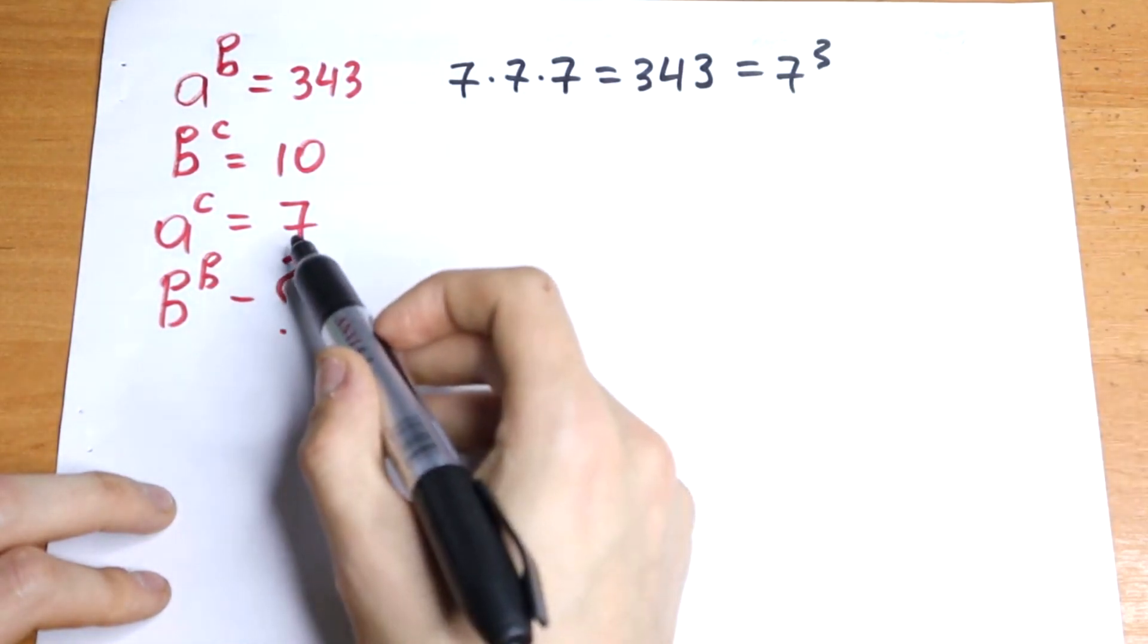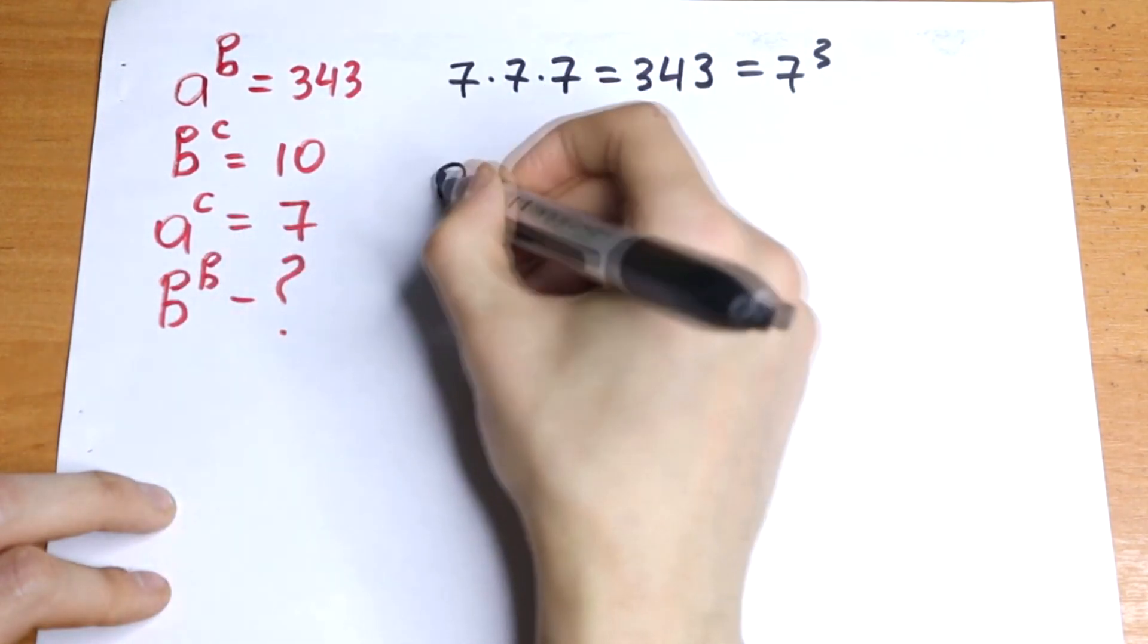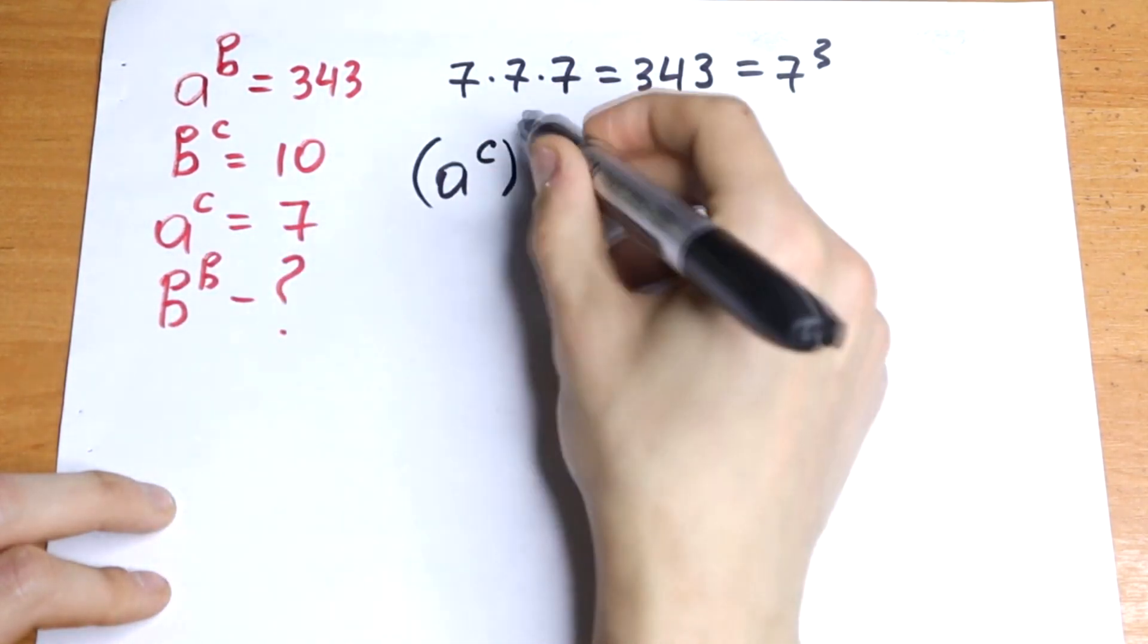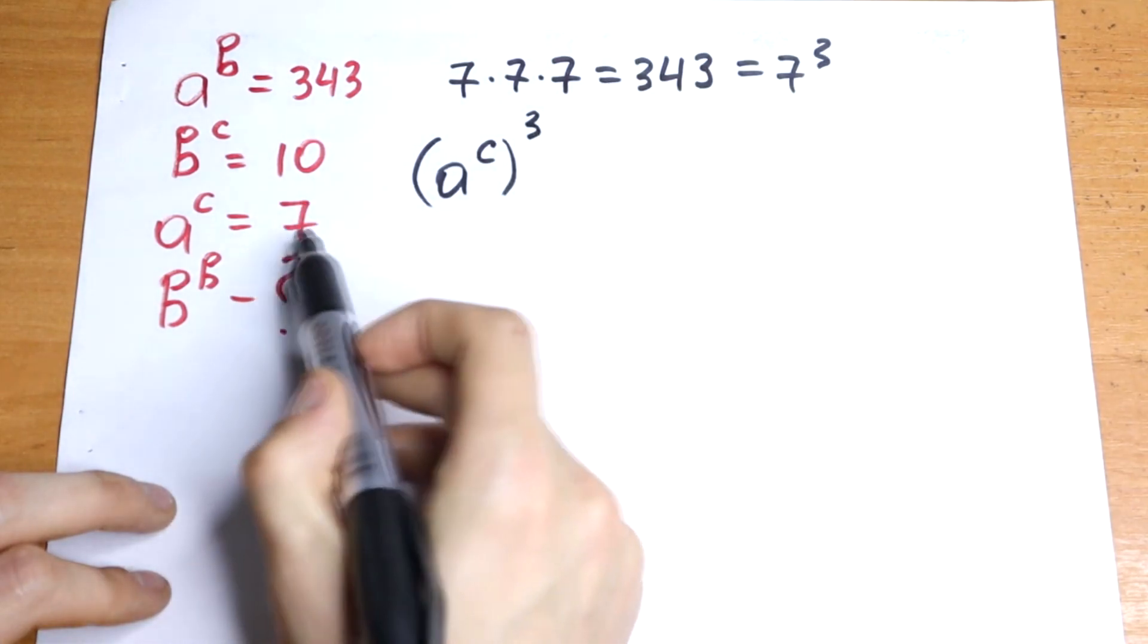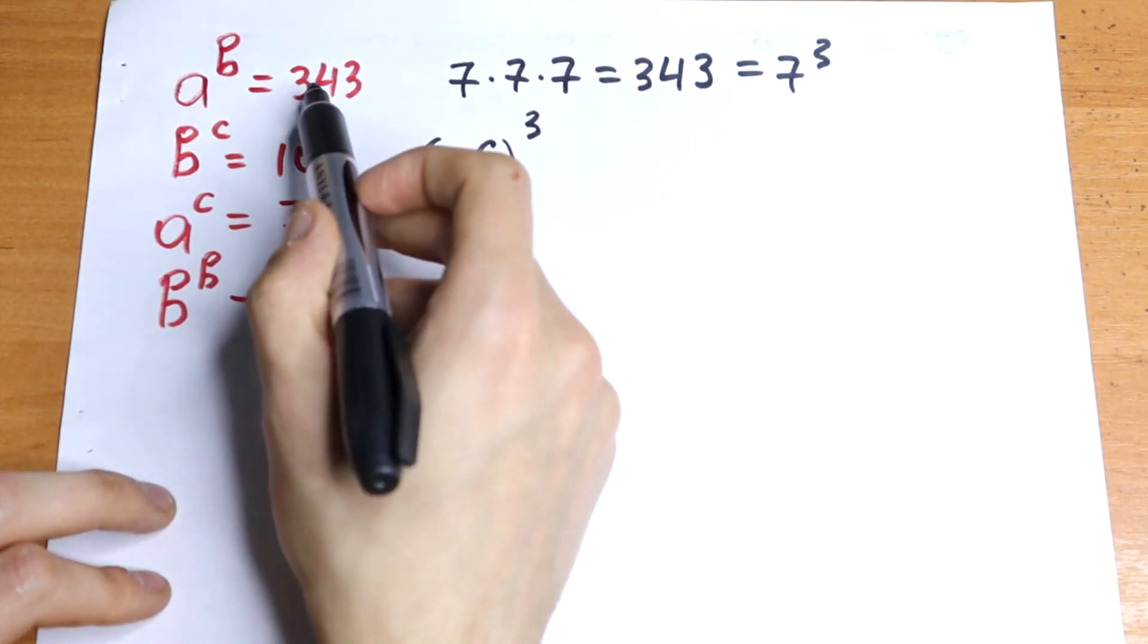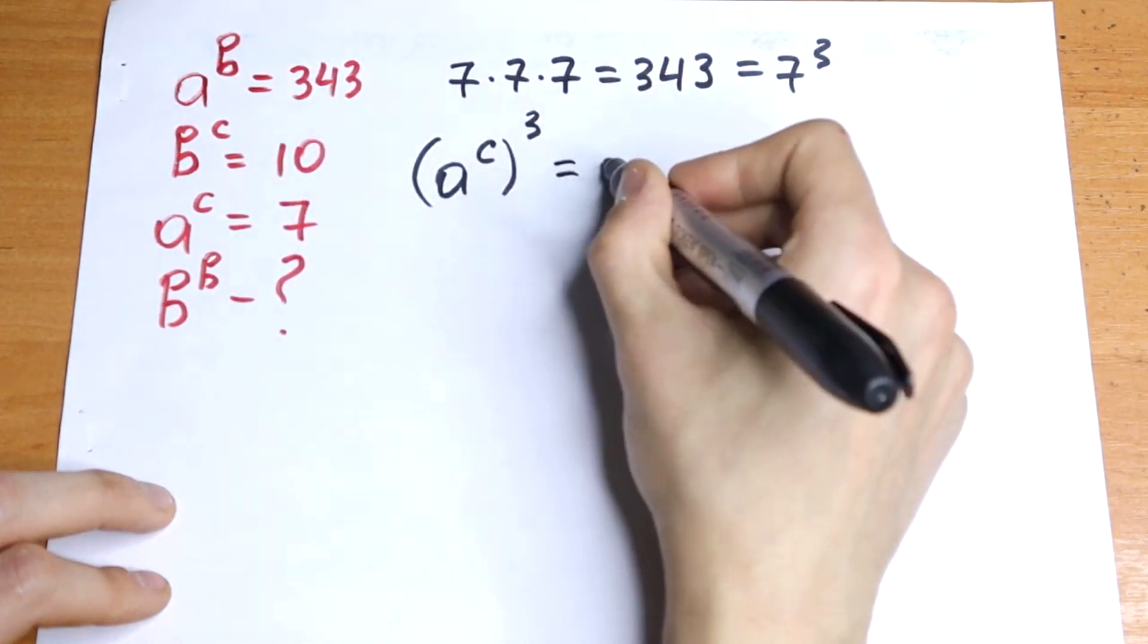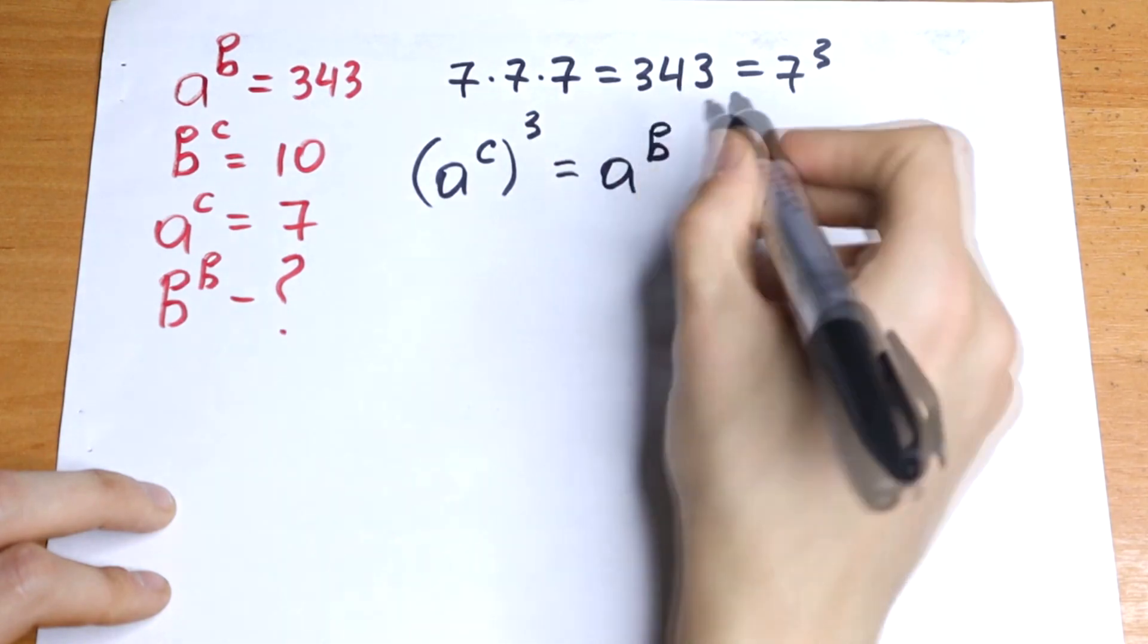So if we raise this to the cube power we will have the next: a to the power c cubed, this will be equal to 343 if we raise to the 3rd power and this is equal to 343 as well, equal to a to the power b from here.